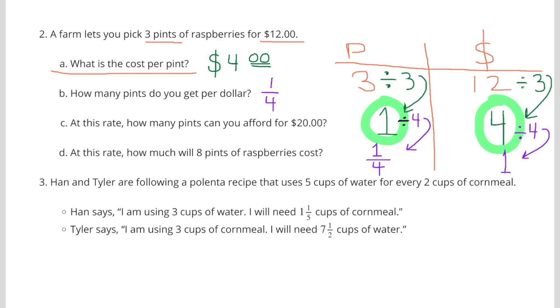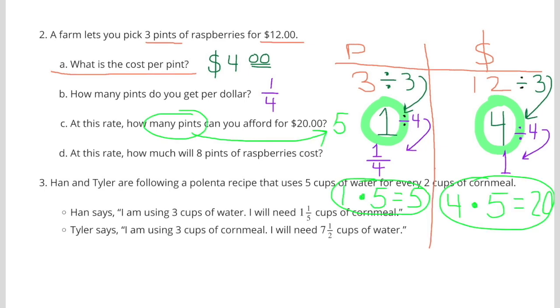C. At this rate, how many pints can you afford for $20? So if you multiply the 4 times 5 to make $20, then you'd have to multiply the 1 pint times 5 to make 5 pints. So for $20, you could afford 5 pints of raspberries.